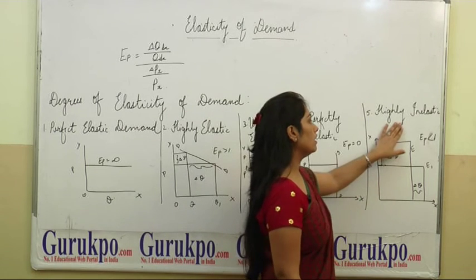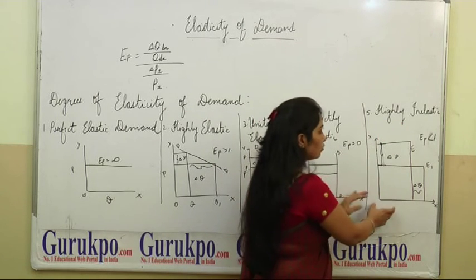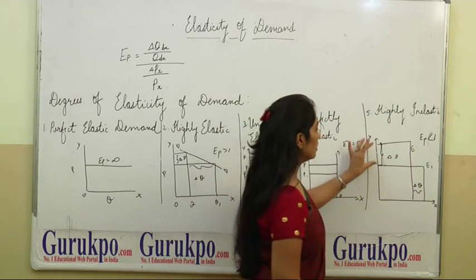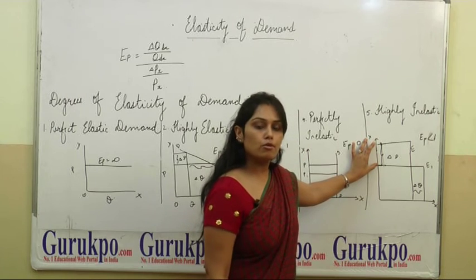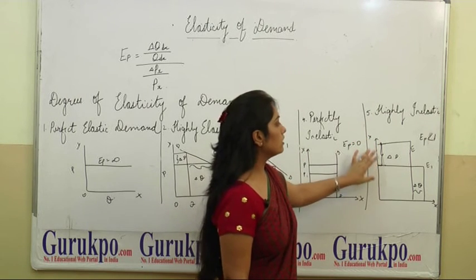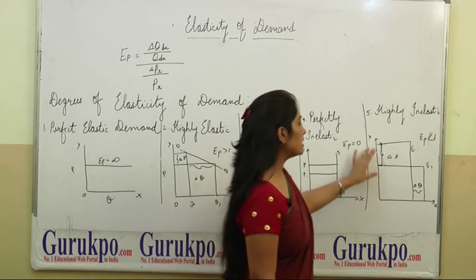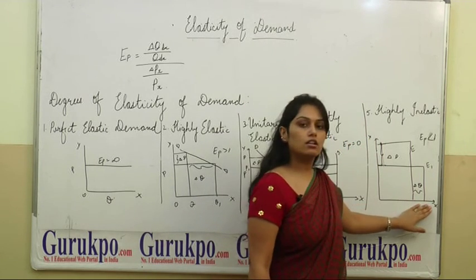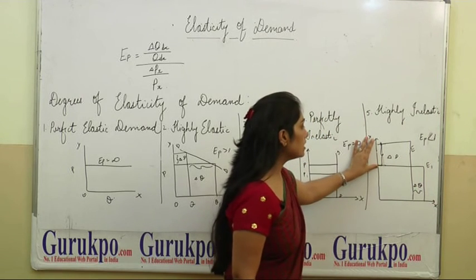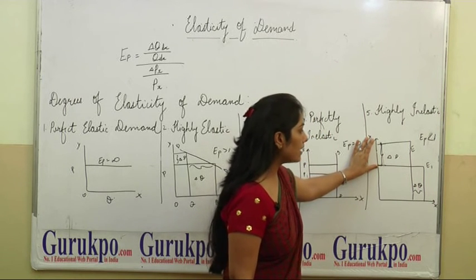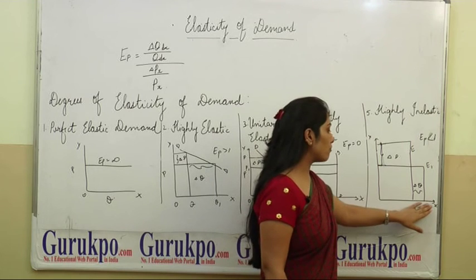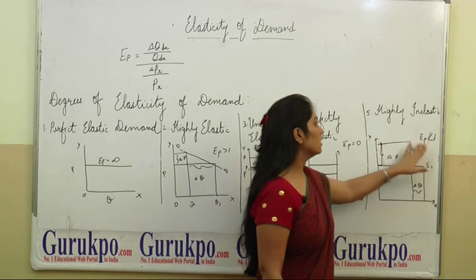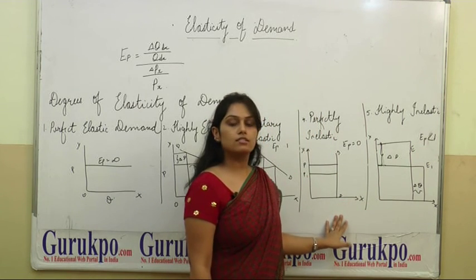The fifth and last degree is highly inelastic demand. As you can see in this diagram, the change in quantity is less while the change in price is more. This means the proportionate change in price is greater as compared to the proportionate change in quantity demanded. This is denoted by Ep less than 1. This is highly inelastic demand.